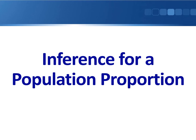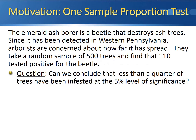This video is going to show you how we can perform inference on a single population proportion. The emerald ash borer is a beetle that destroys ash trees. Since it's been detected in western Pennsylvania, arborists are concerned about how far it has spread. They take a random sample of 500 trees and find that 110 tested positive for the beetle. We want to know if we can conclude that less than a quarter of trees have been infested at the 5% level of significance.